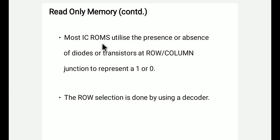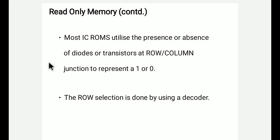Most IC ROMs utilize the presence or absence of diodes or transistors at the row and column junctions. The presence represents 1 and absence represents 0. We use diodes and transistors to store 0s and 1s. In RAM, the flip-flops store the 0 and 1 values.